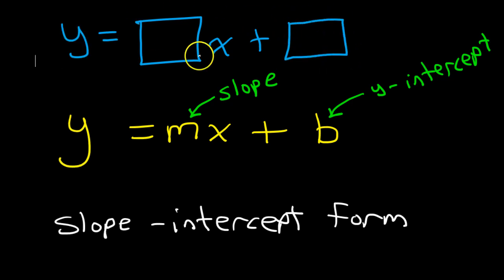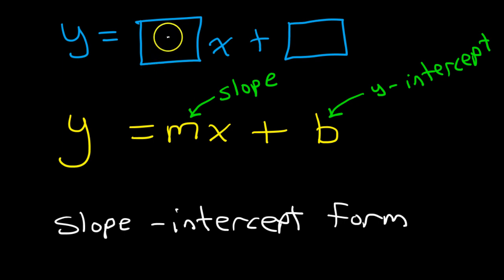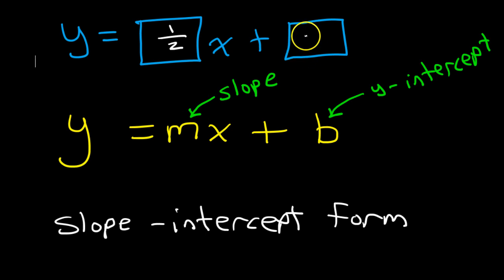If we know the slope, we can put it here. So say if I know that the slope is 1 half, then I can put it here. If I find out that the y-intercept is 5, I can put it here, and then I have the equation. So all we need is the slope and the y-intercept.